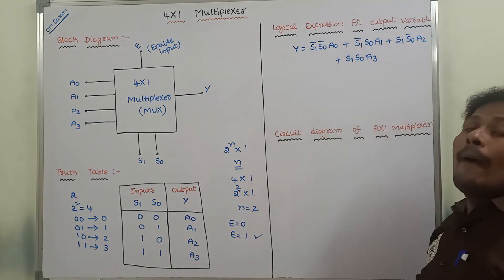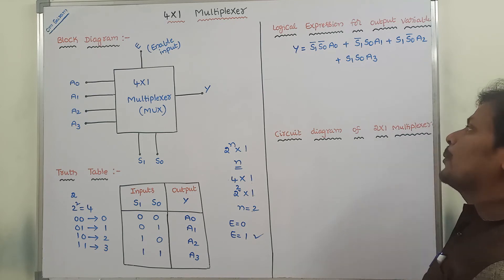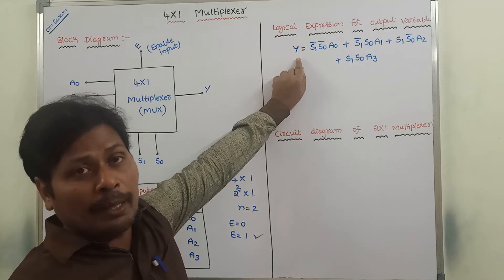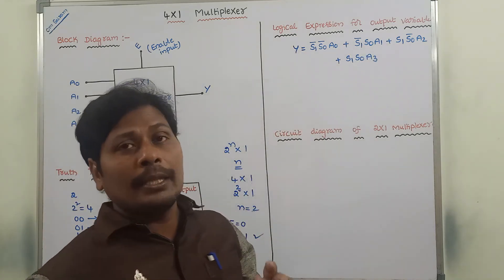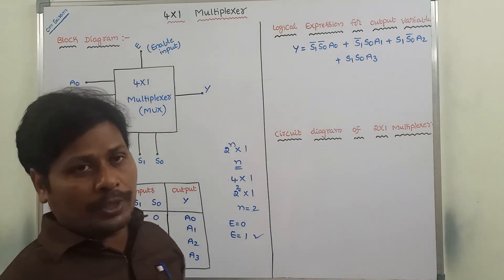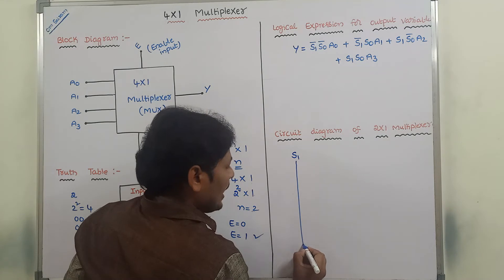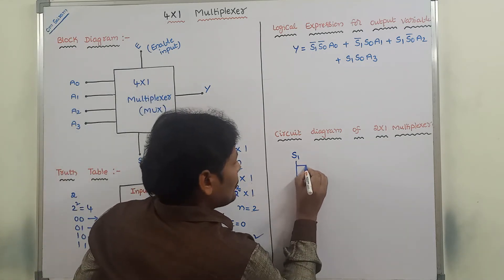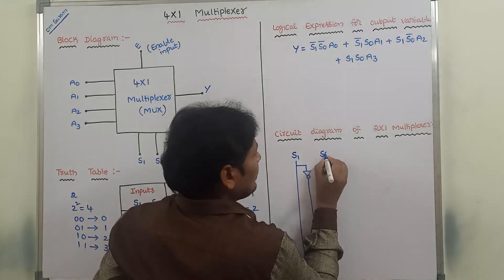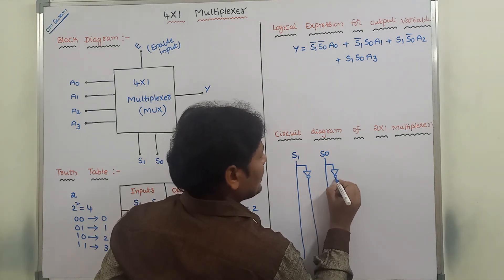Once we have the Boolean expression for output variable Y, we draw the circuit diagram. The expression has three types of variables: S1, S0 as selection inputs and A0, A1, A2, A3 as data inputs. First, we draw the S1 line — the S1 line represents S1=1, and through a NOT gate we get S1̄. Similarly, we draw the S0 line, and through a NOT gate we get S0̄.